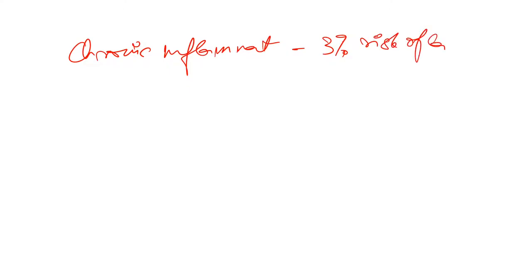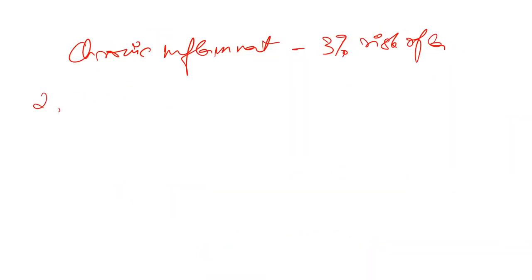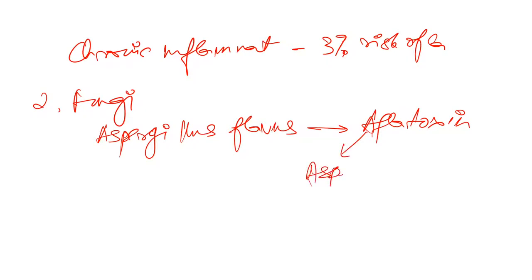The most important points are adenocarcinoma and MALToma. Now we will talk about a fungus — Aspergillus flavus. It produces something known as aflatoxin. To remember: 'A' for Aspergillus and 'fla' for flavus, so Aspergillus flavus produces aflatoxin.